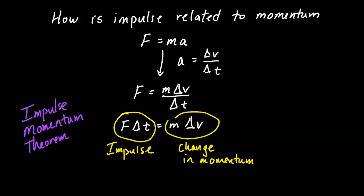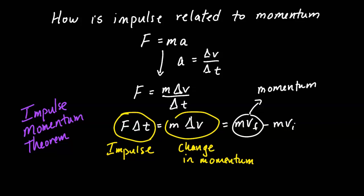On the right-hand side, since delta v is final minus initial, we can rewrite this as mv final minus mv initial. Since mv is momentum, the final momentum minus initial momentum equals the impulse. In other words, if you exert an impulse on an object, it will cause that object's momentum to change.